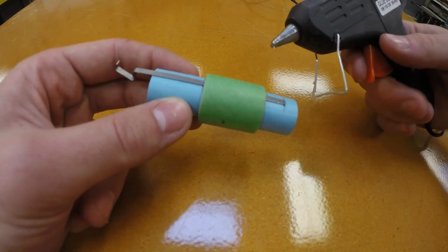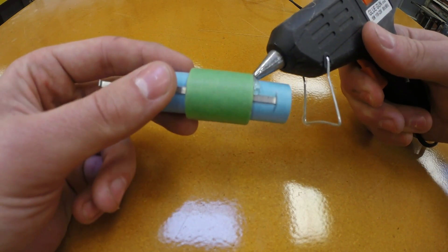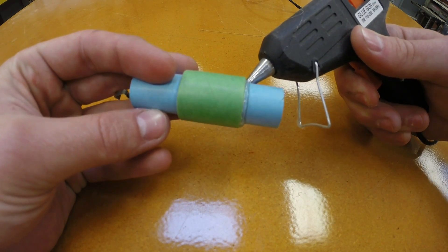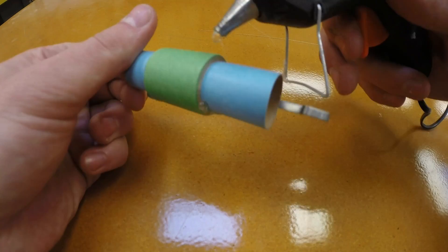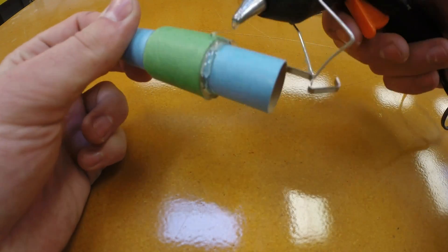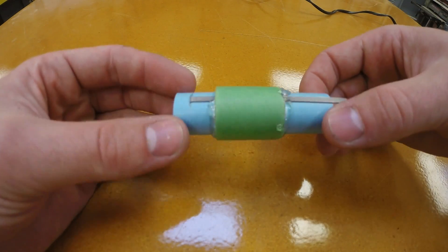Once that looks right you can use some hot glue and glue the green adapter tube onto the blue engine tube. I feel I've got to warn you hot glue is hot, don't touch it.